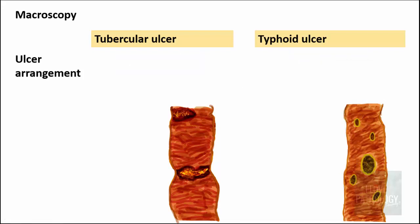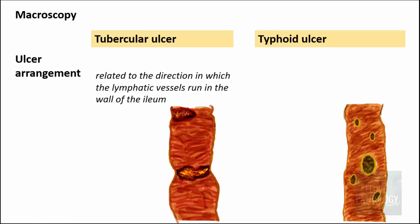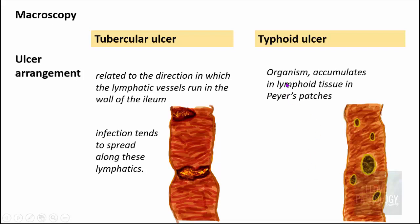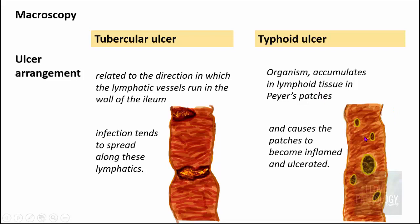Why are tubercular ulcers transverse and typhoid ulcers longitudinal? Tubercular ulcers are transverse because the infection spreads along the direction in which the lymphatic vessels run in the wall of the ileum. Typhoid ulcers are longitudinal because the organism accumulates in the lymphoid tissue of Peyer's patches — the Peyer's patches become inflamed, the mucosa above them becomes inflamed, and finally they become ulcerated, resulting in longitudinal ulcers.